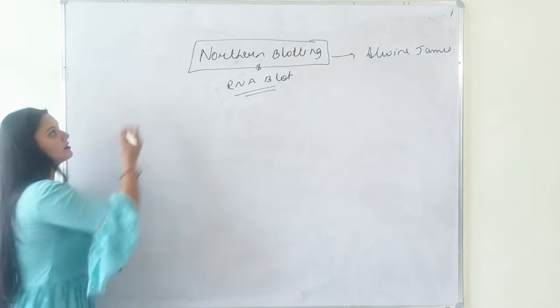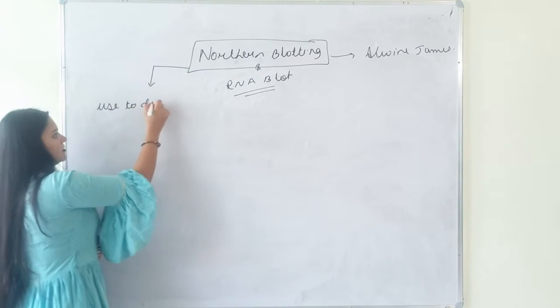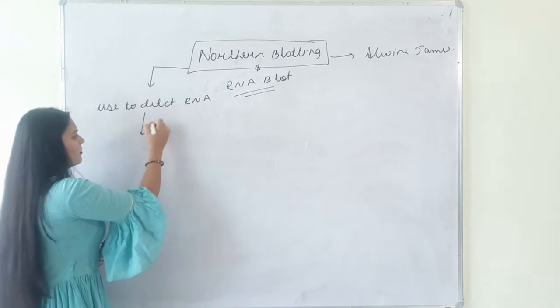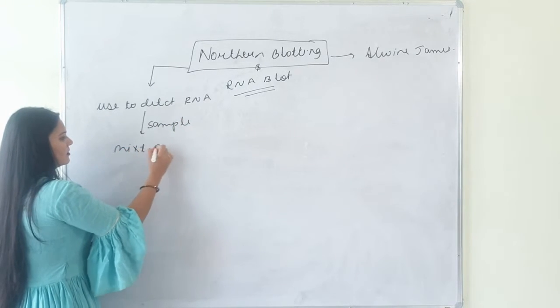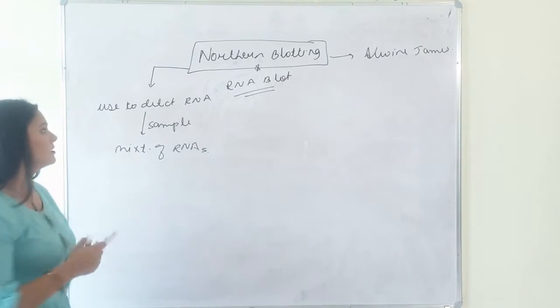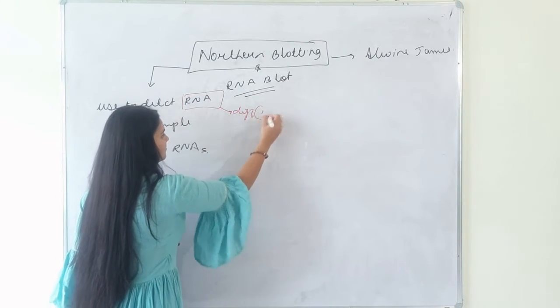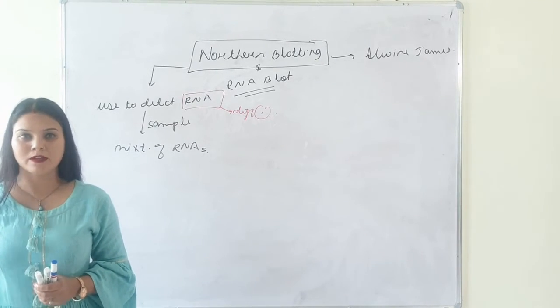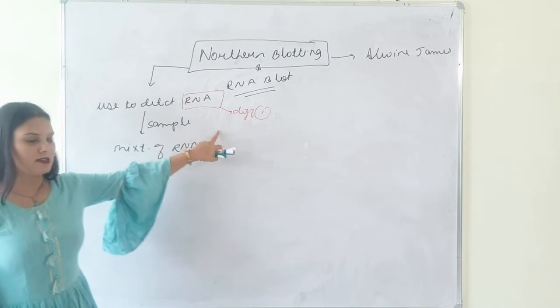Northern blotting here is used to detect RNA in the sample of mixtures of RNAs. This is difference 1. In southern blotting, we use DNA as a sample and in northern blotting, we are using RNA as a sample.